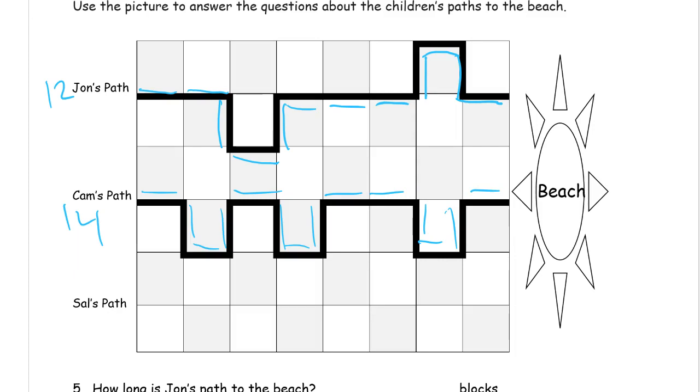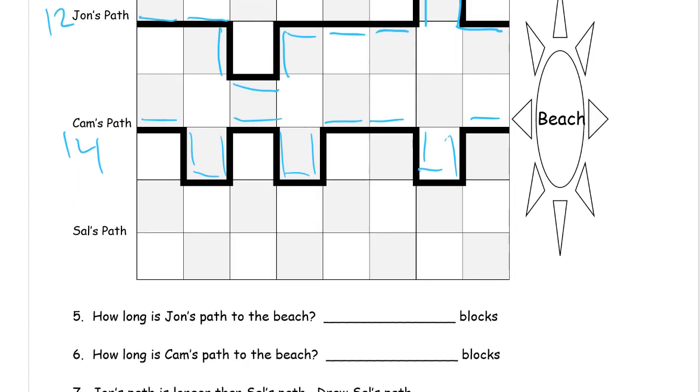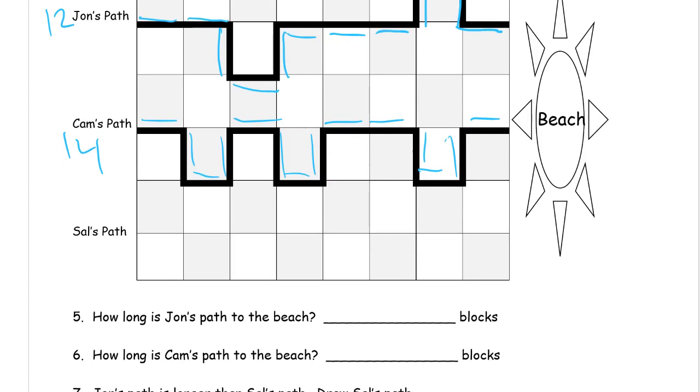And Sal's path, we haven't figured that out yet. How long is John's path to the beach? Well, we just counted that one. It's 12 blocks. How long is Cam's path to the beach? Let me figure out that one. It's 14.